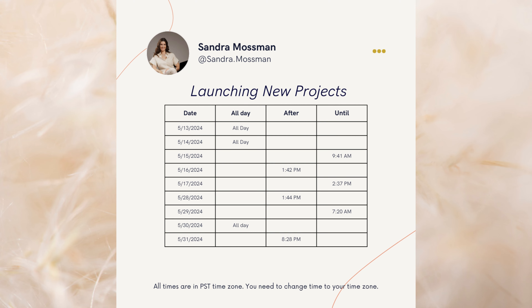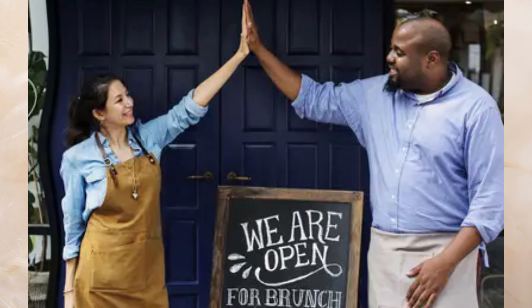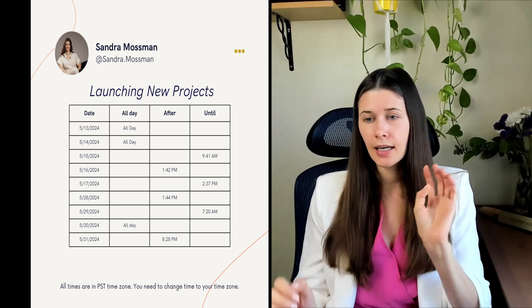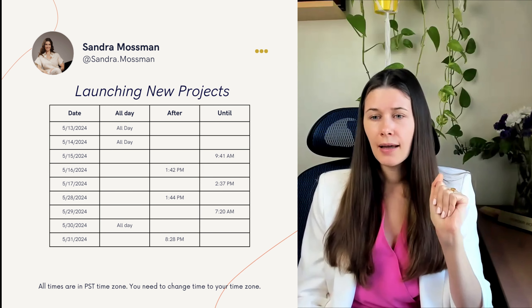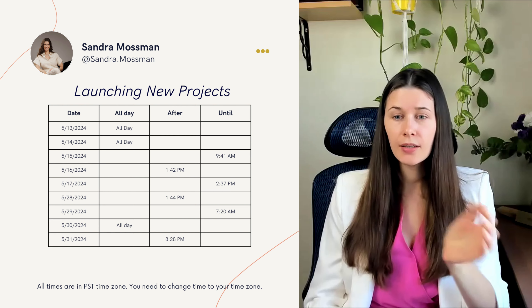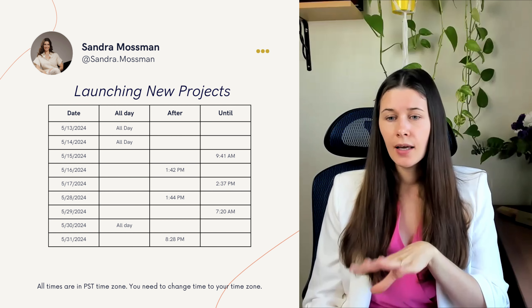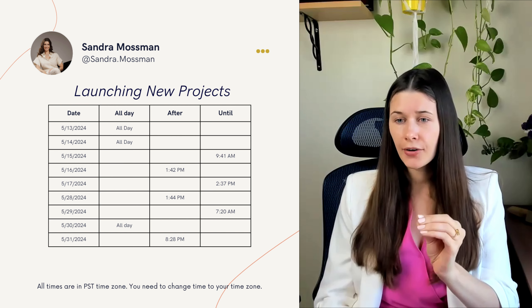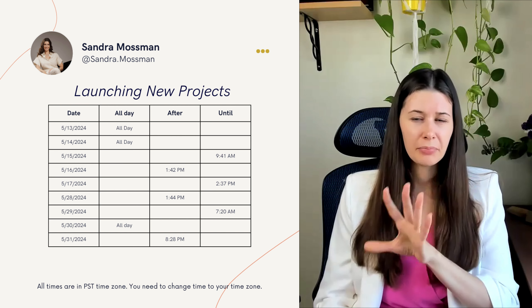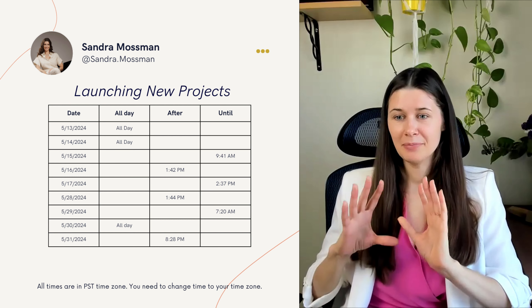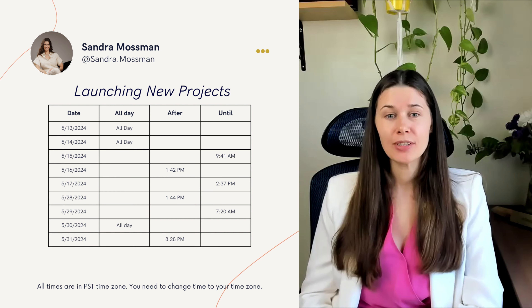The next event is launching new projects. This is for when you've worked for a long time on something and need to launch new advertising, introduce a new product to customers, or send announcement emails. Good timing includes May 13 all day, May 14 all day, and May 30 all day — or June 1 after 8:28 p.m. Pacific time, which is pretty late but may work for your time zone.